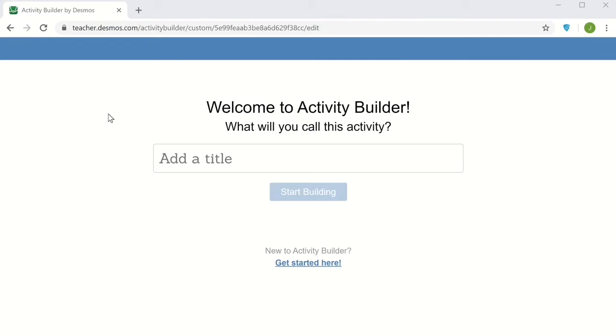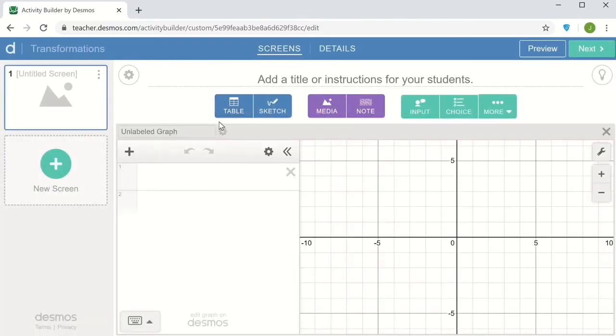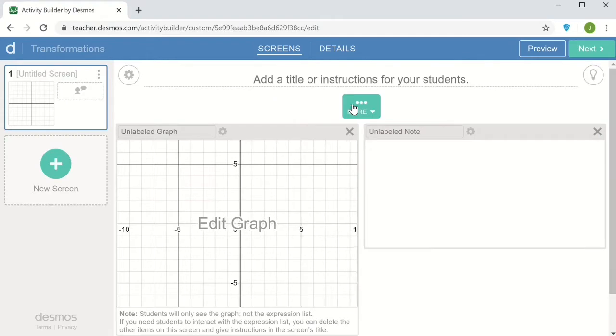In this video I want to show how to build a simple activity that connects a graph with some student input and it will ask a question about transformations. I'm just going to call it transformations and I want to include a graph component, a note component, and a component for student input.